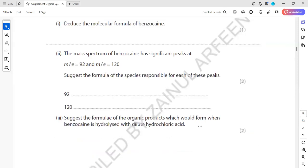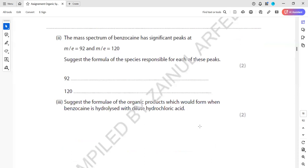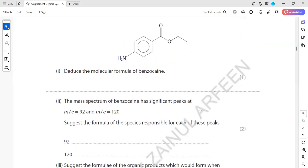Next is, the mass spectrum of benzocaine has significant peaks at m/z = 92 and 120. So deduce the formula of those species. So you have to check this one. What is the total mass? Nitrogen is 14 plus hydrogen is 2, so it will make 16. And about this one, this was CH2.